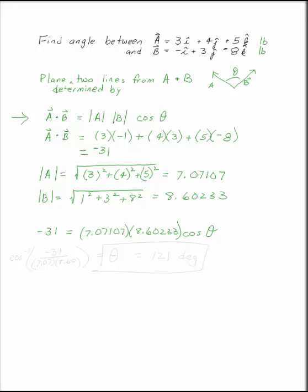You can solve for theta. Take the arc cosine of minus 31 over 7.07 and 8.60 using all of your significant digits. This is the arc cosine of that. And theta is 121 degrees.